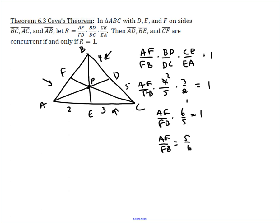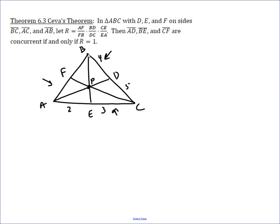The proof uses one approach — there are multiple ways to prove this. The one I want to talk about uses what we call the ratio theorem and the area theorem, which says that in a triangle with a cevian, the area of triangle ABP over the area of triangle CBP, for some random point P on the cevian, is going to be equal to the ratio of the opposite sides, AE over EC.